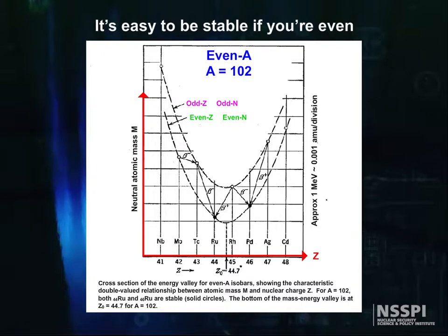Looking at this graph, we can see why some nuclides are unstable. They're trying to get to the bottom of this energy valley by changing neutrons into protons, or protons into neutrons, driven by the energy difference between their ground state and the ground states of the nuclei at the bottom of the valley.